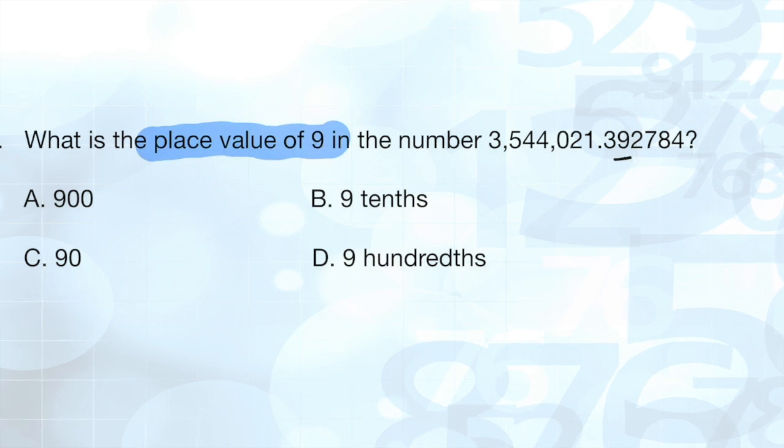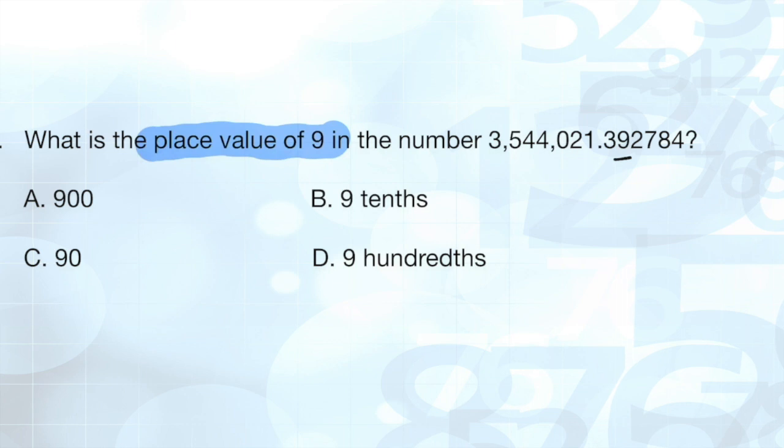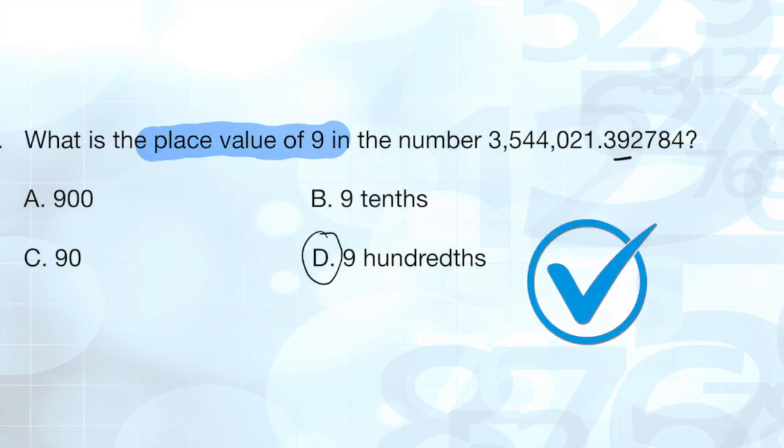This is our thousandths position, and on and on. So if we're looking at the nine, this is the hundredths position. And so our answer is choice D, nine hundredths.